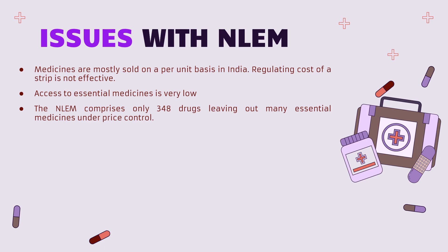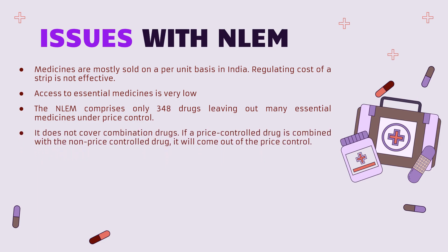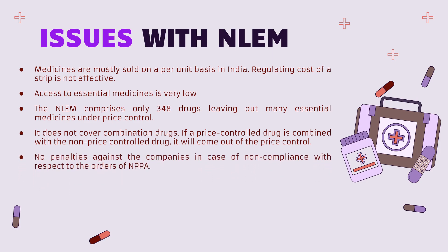The Indian NLEM comprises 348 drugs, but this leaves out many essential medicines from price control. A person who requires drugs for other kinds of treatment cannot afford them. The list is limited to 348 medicines, leaving other medicines uncontrolled, which becomes a burden on the healthcare of the country and the common man. Another issue is that it does not cover drug combinations — if a price-controlled drug is combined with a non-price-controlled drug, the resulting combination is not straightforwardly covered, and the rules around combinations are very complex and not well included in the list.